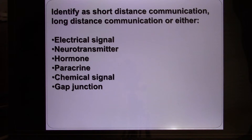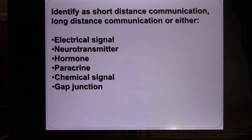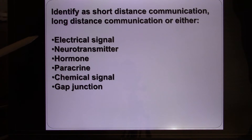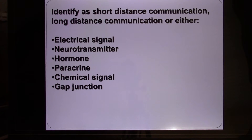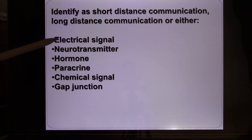Neurons use the electrical signal called the action potential to transduce the signal in the cell. And between neuron and neuron, they release a chemical signal — that's the neurotransmitter. The electrical signal is long distance, but the neurotransmitter is actually short distance because the gap between neurons, called the synapse, is a very small area — in the nanometer range, 10 to the minus 9 meters.